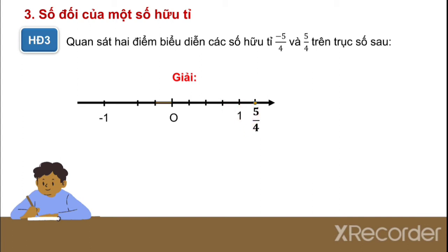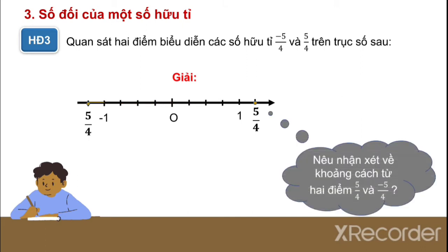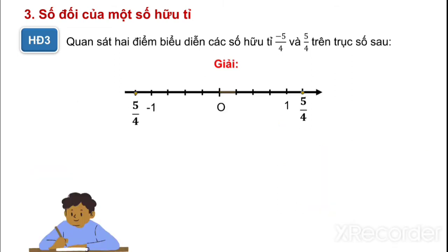Tương tự, ta biểu diễn số đối: âm 5 phần 4 cũng lấy 4 phần từ 0 đến âm 1, và lấy thêm một phần nữa, ta sẽ được là âm 5 phần 4. Nhận xét về khoảng cách: 2 điểm 5 phần 4 và âm 5 phần 4 cách đều điểm O.